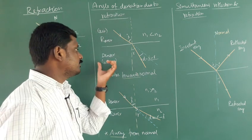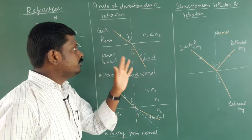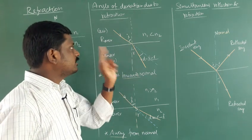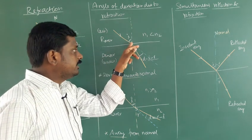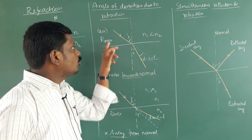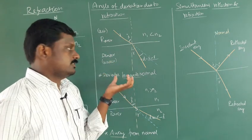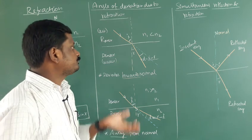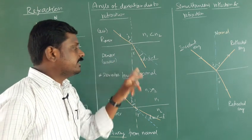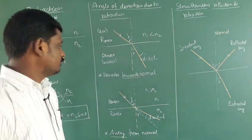Consider rarer medium as air and denser medium as water. Light passes from air to water and refracts. Without a medium, light travels in a straight line; with a medium, it deviates from the original path. When light travels from rarer to denser, the refracted ray deviates towards the normal. Here n1 is less than n2 — the refractive index of air is 1 and water is around 1.3 — so the angle of deviation is i minus r.